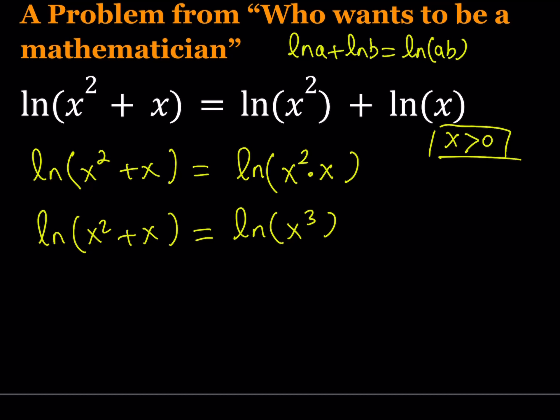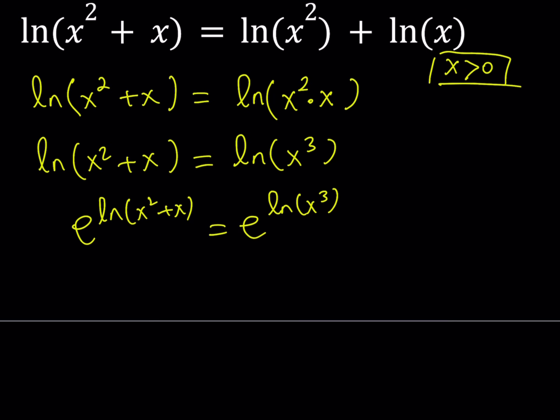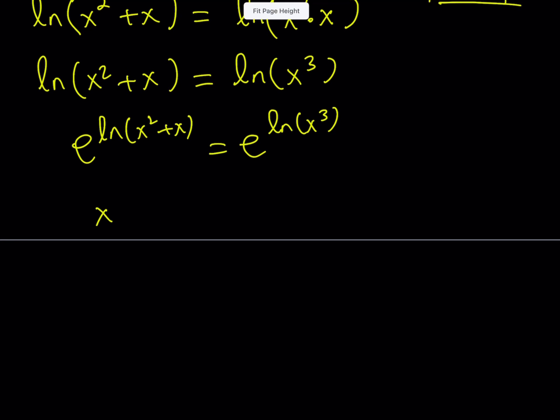Now we can get rid of the ln's, which means you can do it e to the power ln something. Okay, if you want to do it that way, that's fine too. Like, make it a little fancier. Okay. So like this. And then e to the power ln something is going to equal x squared plus x equals x cubed. Great.